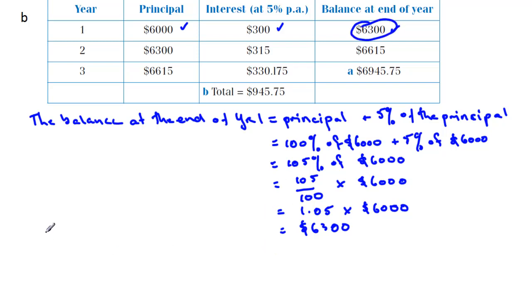Now, if we repeat this each year, we could say that the balance at the end of year two - using the same principle, it would be 100% of what was there at the end of the year, that's $6,300 now, plus the interest, 5% of $6,300.